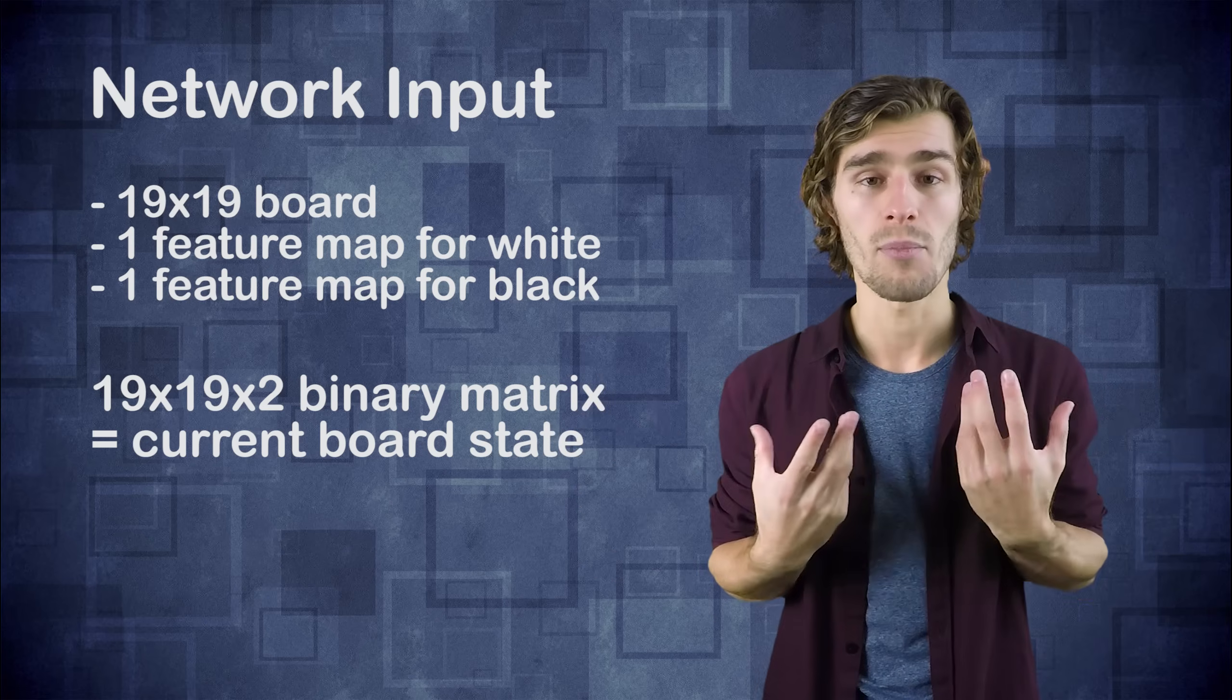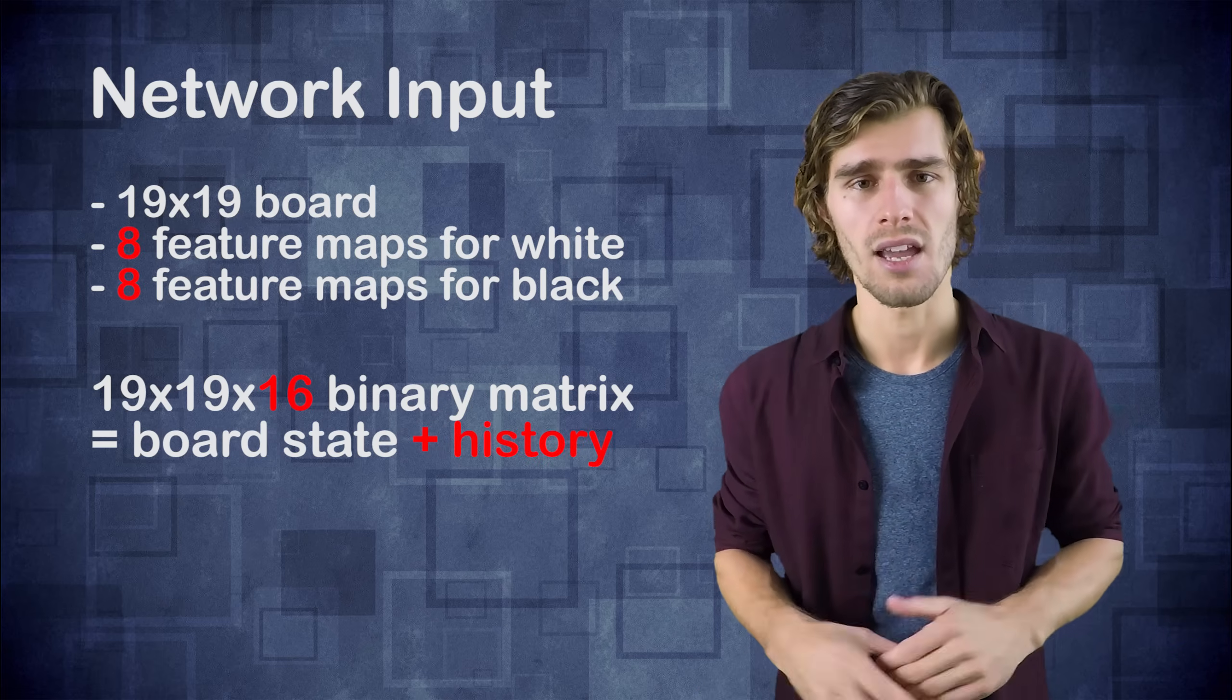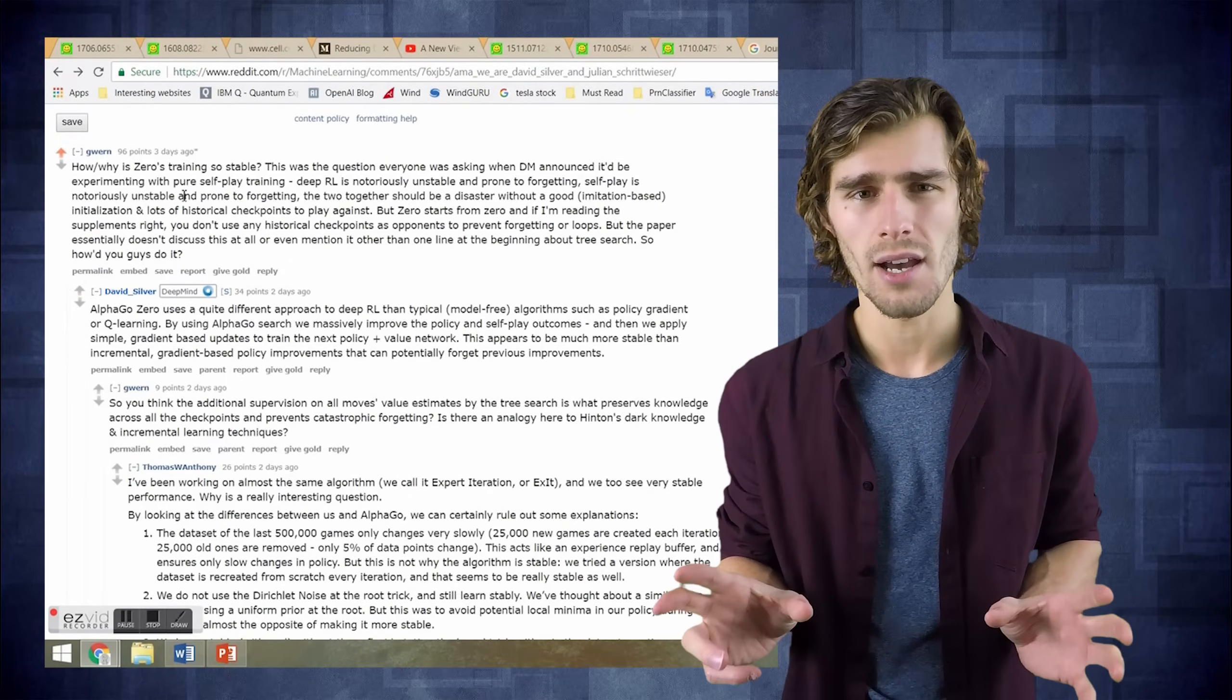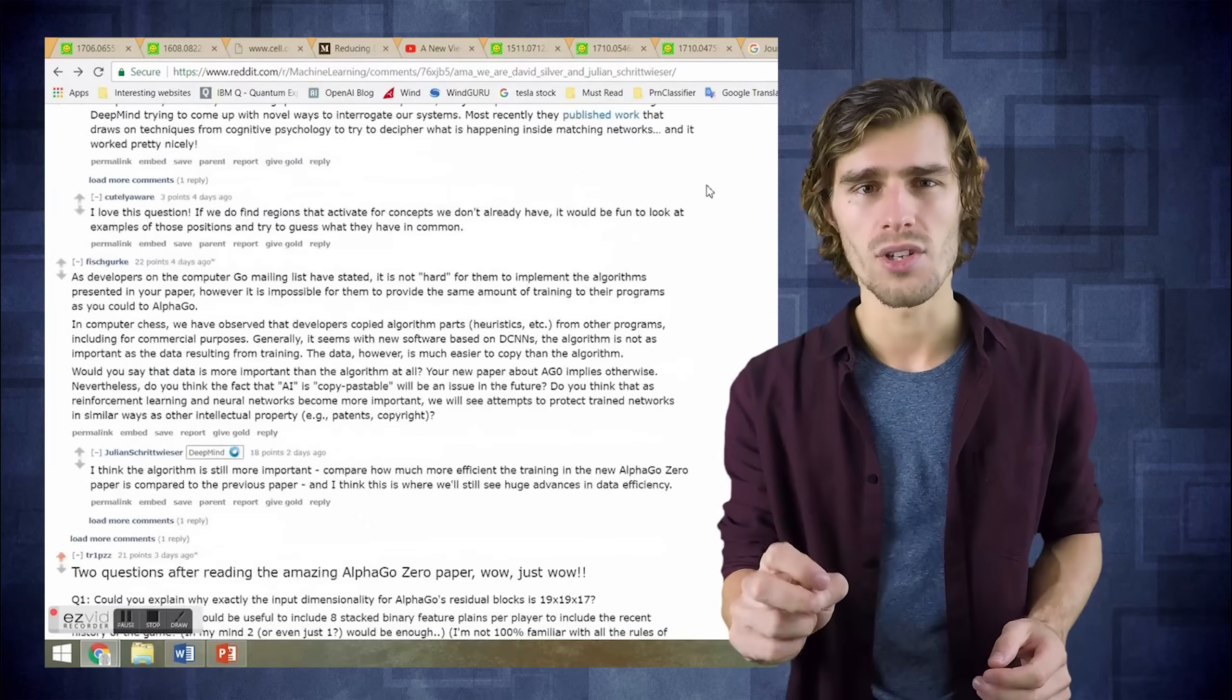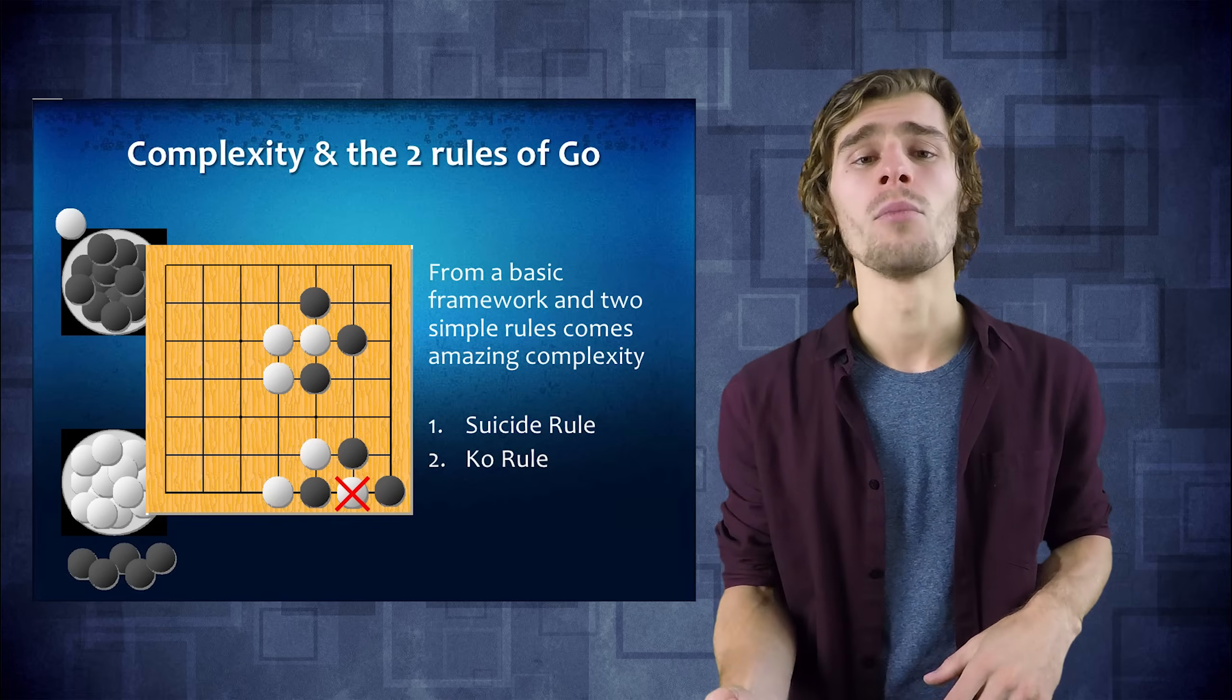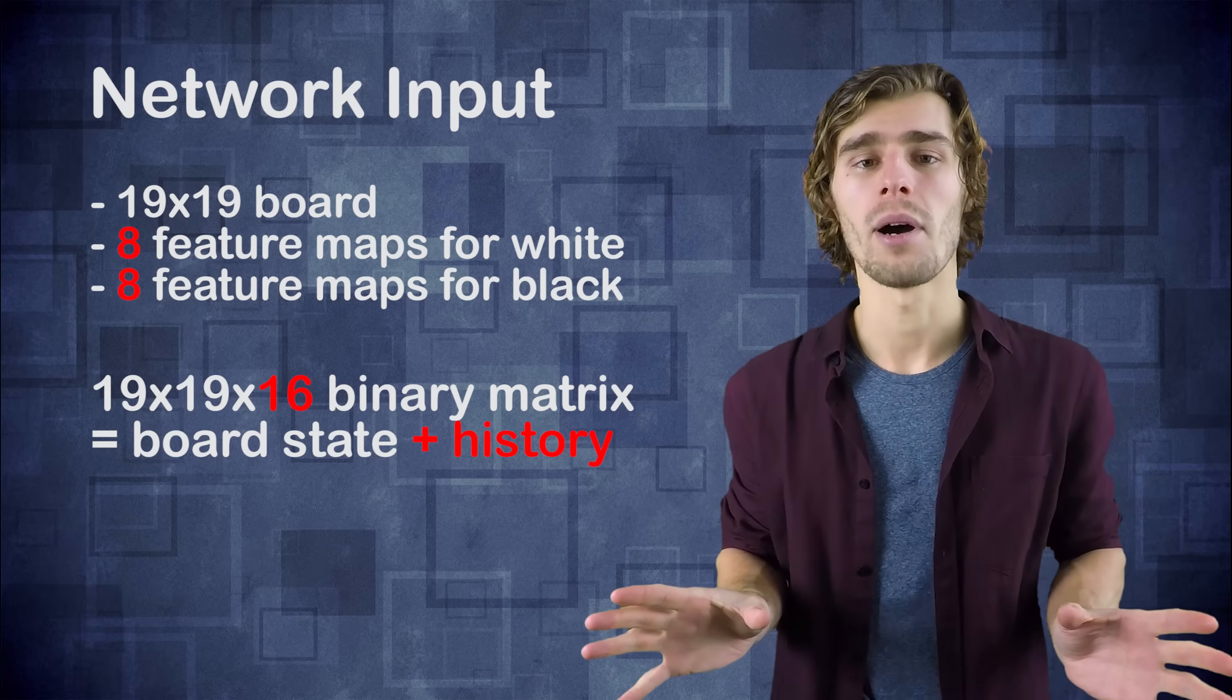Now instead of simply having those two planes that actually represent the current position of the board, they also include seven other feature planes which represent the seven past board states. So they include a little bit of a history of the game inside these board representations. I was kind of surprised as to why they did this so I asked the question on their Q&A on Reddit and the reply I had is that this history actually acts as some kind of an attention mechanism. So if you also include the past moves of your opponent then your network can actually focus on what their opponent was playing and this works as some kind of an attention mechanism. It's kind of interesting. Additionally, there are also some Go specific rules that require you to take into account the recent history in order to play moves that are allowed by the game.